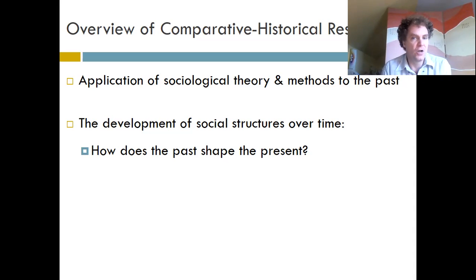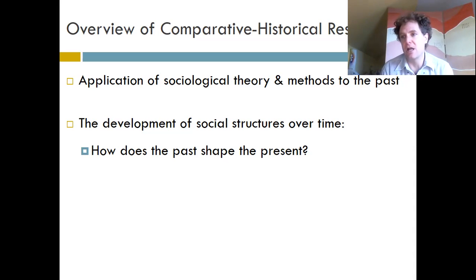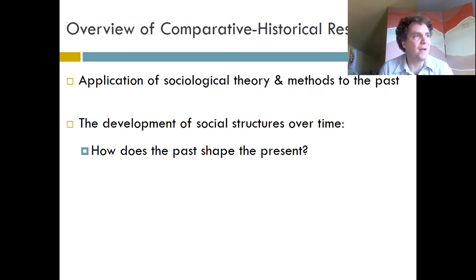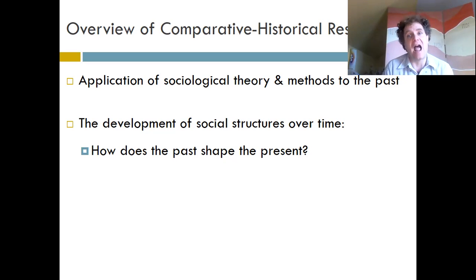This is really the question of social structure. Sociologists love to study social structure — inequality, organizations, the structure of institutions. It can sometimes seem like that's just the way the world is, that's just the way society is. But what comparative historical research wants to do is ask: how did the world become that way? How did social processes create the structures that we now live in?